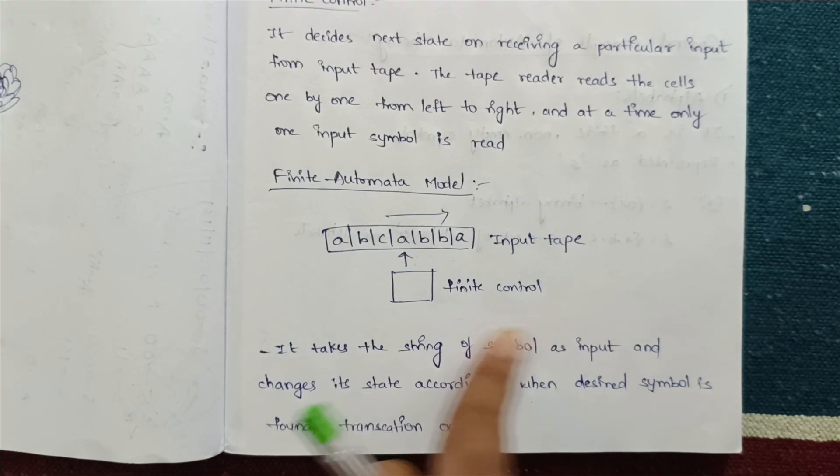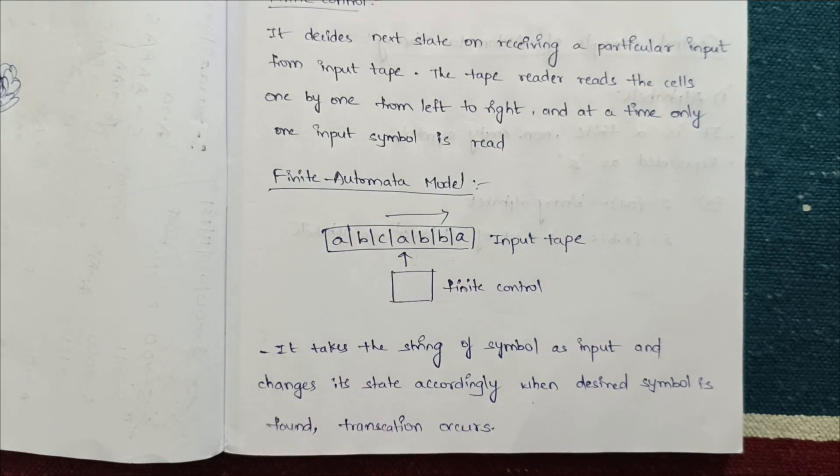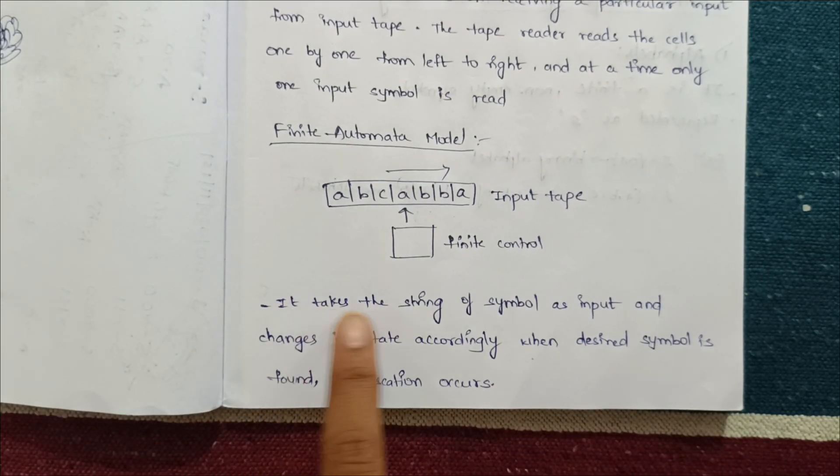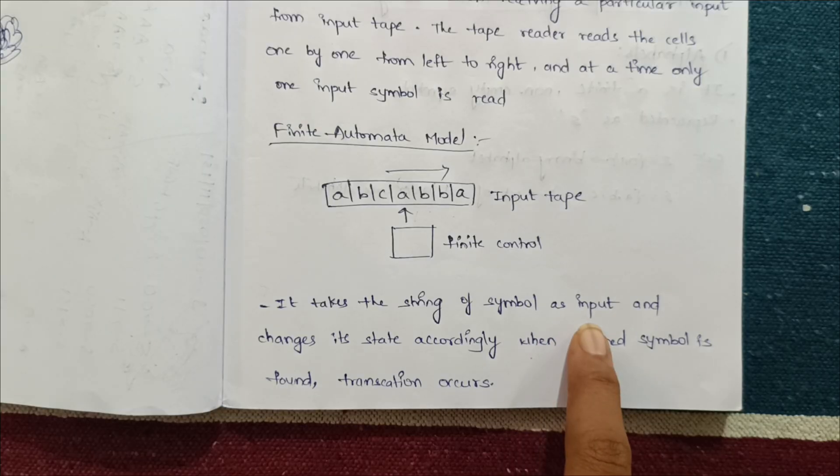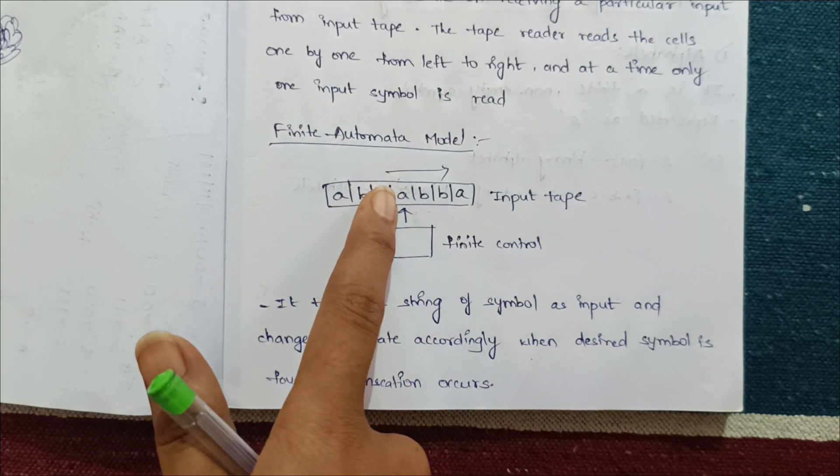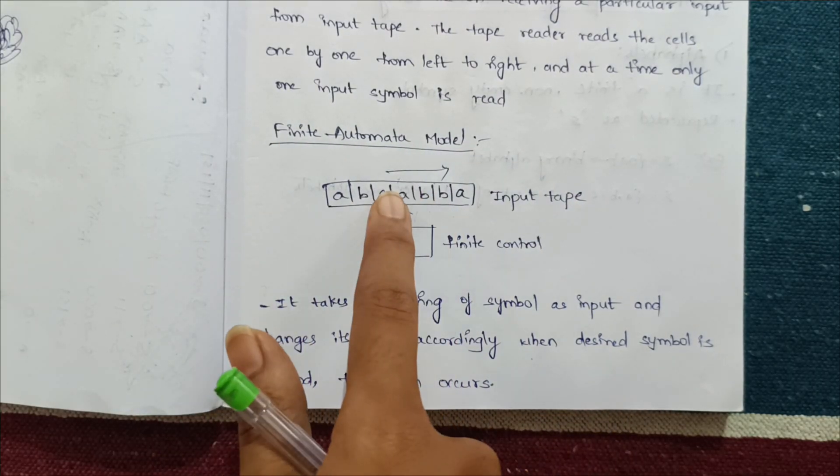And this is a representation of the finite automata model. So here see, it takes the string of symbols as an input. Suppose for example, A is a string from the input, it takes A.